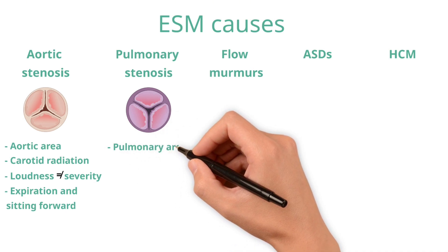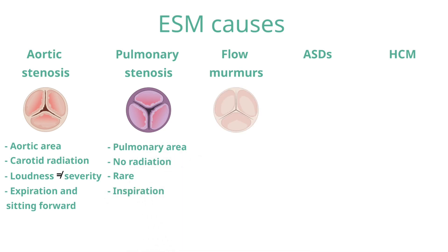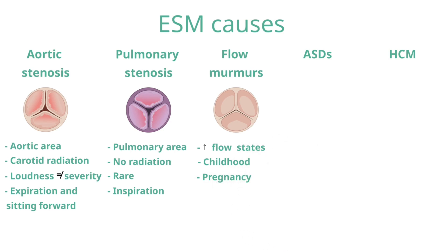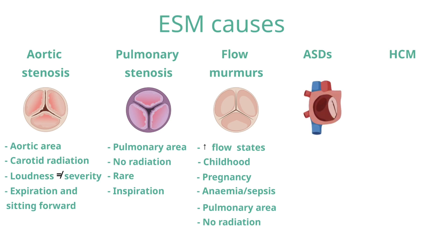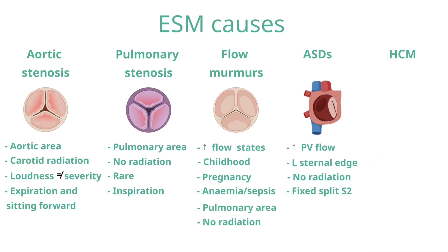Pulmonary stenosis is loudest in the pulmonary area and does not significantly radiate. It is rare and usually quiet, made louder by held inspiration. Flow murmurs occur due to increased blood flow through a structurally normal heart and can occur in childhood or hyperdynamic states such as pregnancy, anaemia, or sepsis. They are often quiet, loudest at the left sternal border, do not radiate, and get quieter on lying flat. Atrial septal defects often cause an ejection systolic murmur due to increased flow across the pulmonary valve, and may be associated with a fixed split second heart sound. Hypertrophic cardiomyopathy can also cause an ejection systolic murmur across the precordium due to LV outflow tract obstruction; it is made worse by the Valsalva manoeuvre.